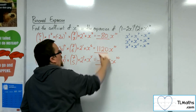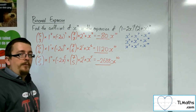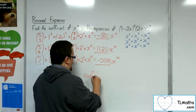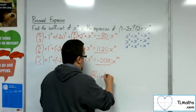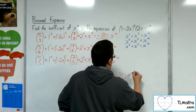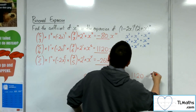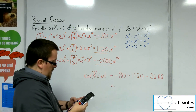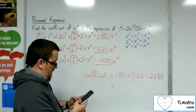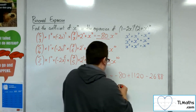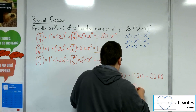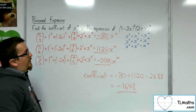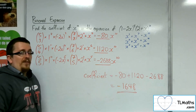All three x to the 10 terms are combined and added together. The coefficient is equal to minus 80 plus 1,120, take away 2,688, which gives minus 1,648. That is the coefficient of x to the 10 in the expansion of (1 minus 2x) to the 5 times (2 plus x) to the 7.